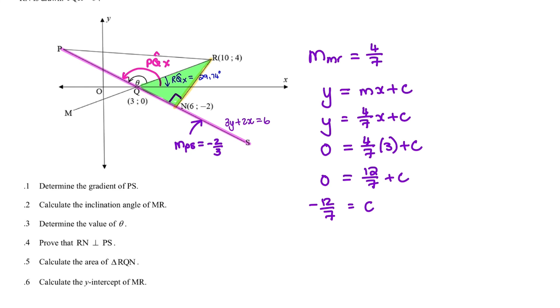And the question was to find the y-intercept. So you can also say the coordinate is when x is 0, the y value is negative 12 over 7. So that is the coordinates of the y-intercept of the line MR.